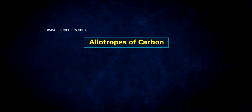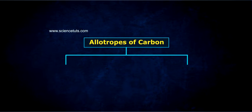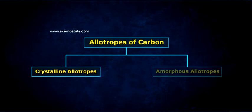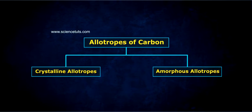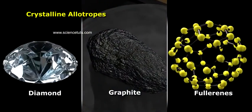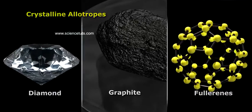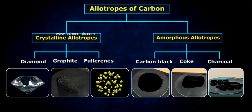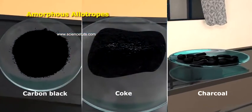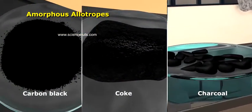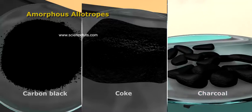Allotropes of Carbon. Carbon exists in two allotropic forms: Crystalline Allotropes and Amorphous Allotropes. Crystalline Allotropes include Diamond, Graphite, and Fullerenes. Amorphous Allotropes include Carbon Black, Coke, and Charcoal.